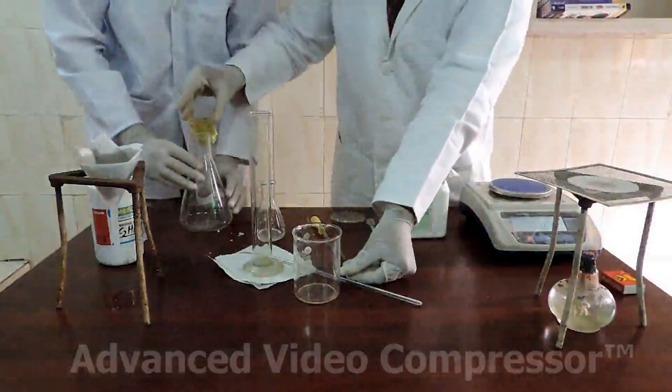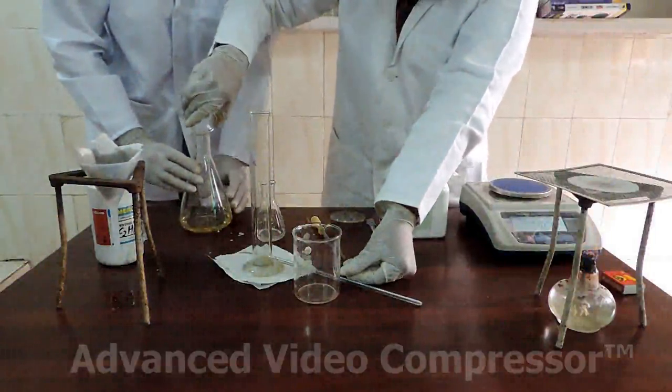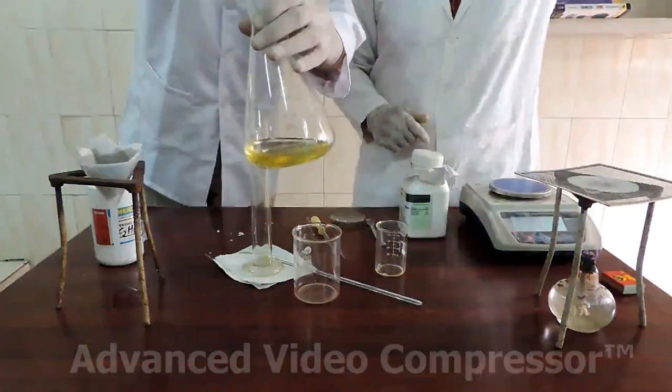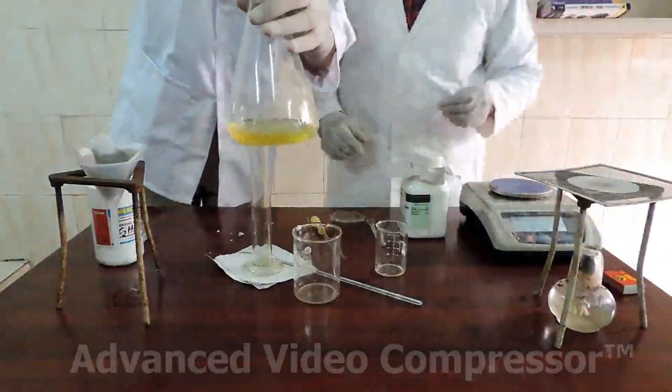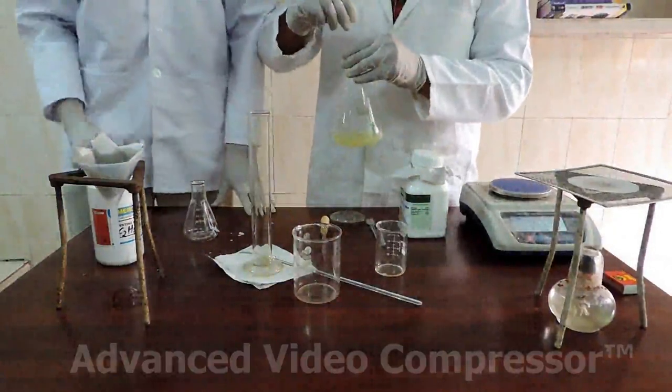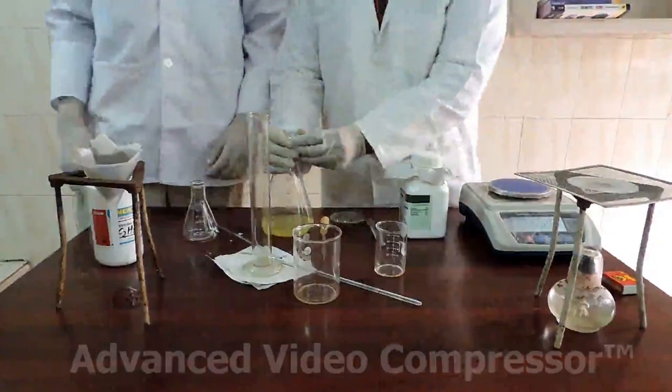We transfer the hot oil to the conical flask. Add the mixture into the hot oil. Mix it and cover the flask with aluminum foil.